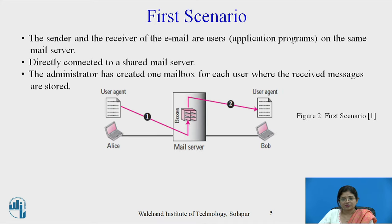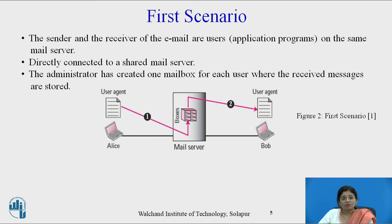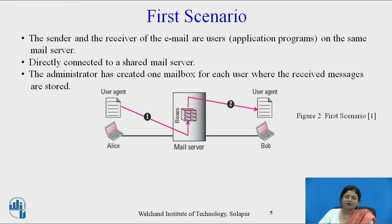Look at this diagram. Two hosts are present — one named Alice and the other named Bob. When Alice wants to send a message to Bob, she runs her user agent and sends the message, storing it in Bob's mailbox. Whenever Bob wants to retrieve the message, he runs his user agent program and retrieves the mail from the mailbox at his convenience.